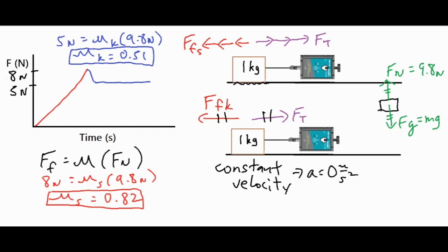To recap: apply force to the force sensor and pull slightly harder and harder until the object budges. Once it budges, pull at a constant velocity. Your graph will rise steadily, take a small drop when the object starts moving, and then level out. From those values you can use the mathematical steps shown to calculate both the coefficient of static and kinetic friction. I hope that was helpful — thanks for watching.